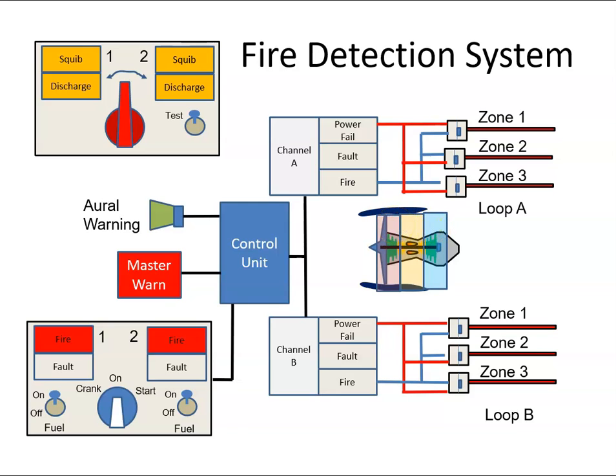Just to make sure that there is a fire, we will have two loops - an A loop and a B loop. So in Zone 1, for example, if there's a fire, we should get a detection in Loop A.